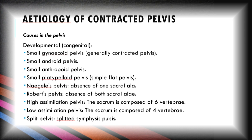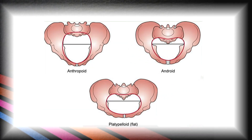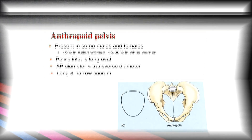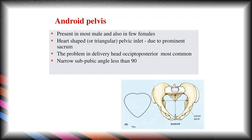In case of anthropoid pelvis, it is present in some males and females — 50% in Asian women and 15 to 30% in white women. The pelvic inlet is long oval in shape; the anteroposterior diameter is more than the transverse diameter. A long and narrow sacrum is present in case of anthropoid pelvis. The android pelvis is present in most males and also in few females, with a heart-shaped or triangular pelvic inlet due to the prominent sacrum.